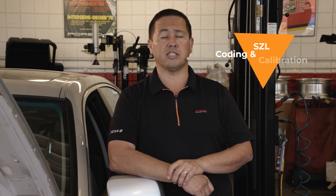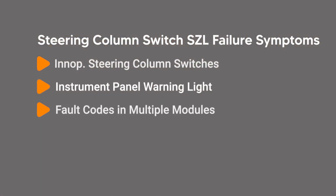Late model BMWs come equipped with an advanced steering column switch assembly, referred to as SCL. The SCL not only contains switches, it also contains the steering angle sensor. When the SCL fails, the steering column switches may become inoperative. You may see a warning light on the instrument panel along with fault codes stored in multiple modules.